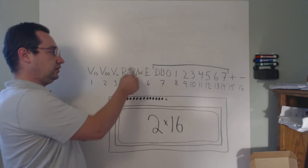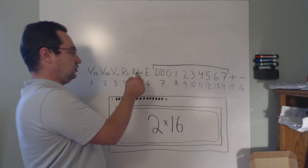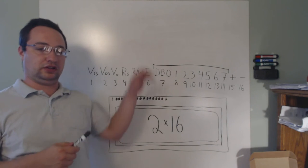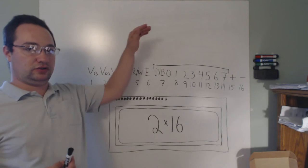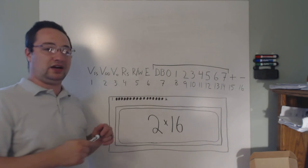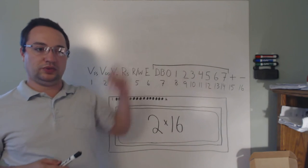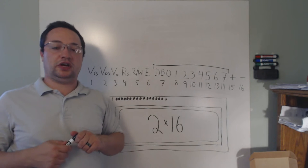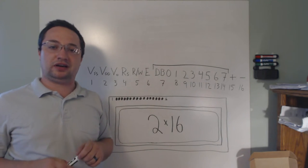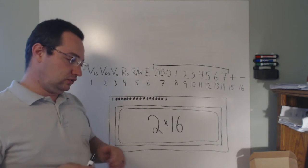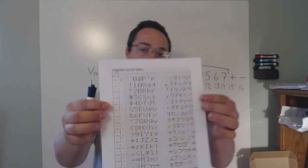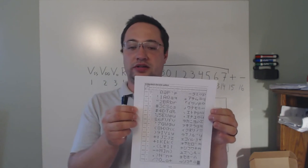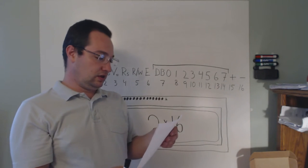The register select and read/write pins work as discussed earlier. If the read/write line is held low by the master, the screen is accepting incoming data. If the master wants data to come out of the slave, it holds the line high, which lets the screen know to get ready to transmit data to the master. The register select is used to select where the data is going.